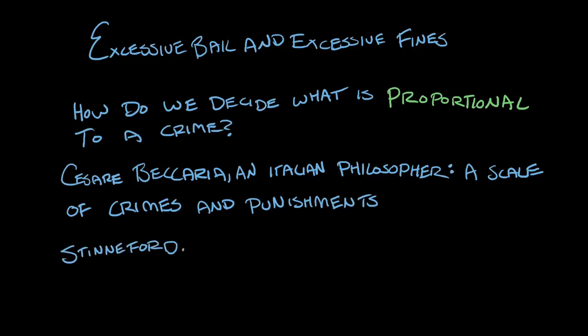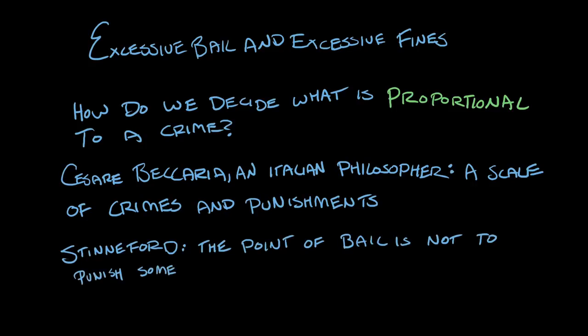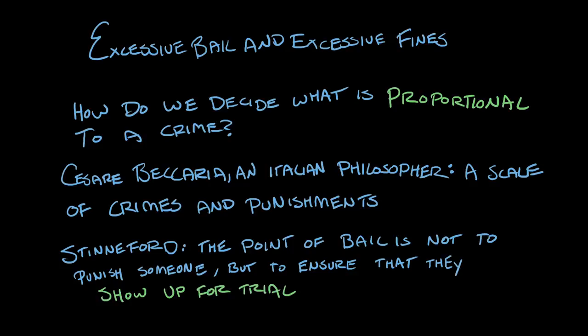The point of bail is not to punish someone, but rather just to make sure that they will appear at trial. And so the amount of money you have to impose for bail doesn't depend so much on what crime you committed, but on your financial resources. It depends partially on the crime too, but largely on your financial resources. The amount of money necessary to make sure that a poor man appears at trial is probably going to be much lower than the amount necessary to make sure that a rich man appears at trial. So it's a standard that depends partly on the nature of the crime, but also partially on the nature of the offender.